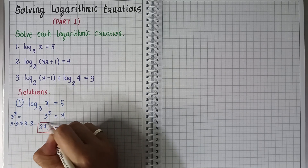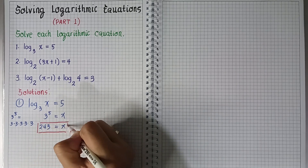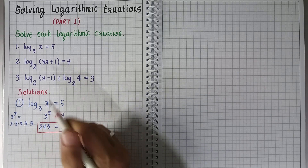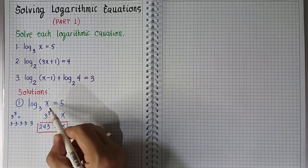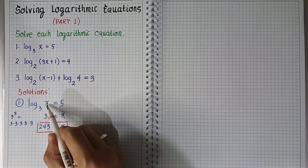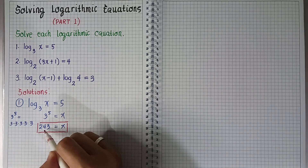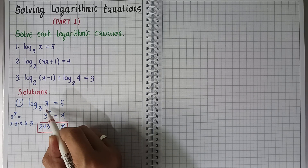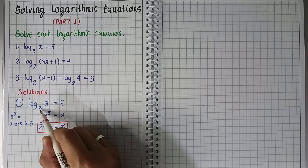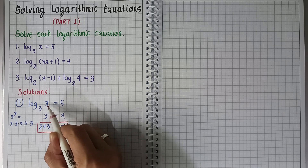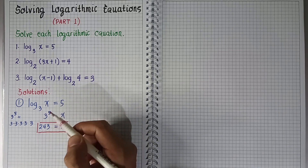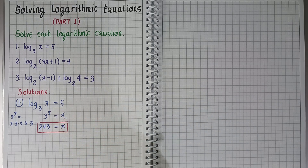To check: our x is 243, and 3 raised to 5 gives us 243. Upon checking, the answer is confirmed. Next, example number 2.